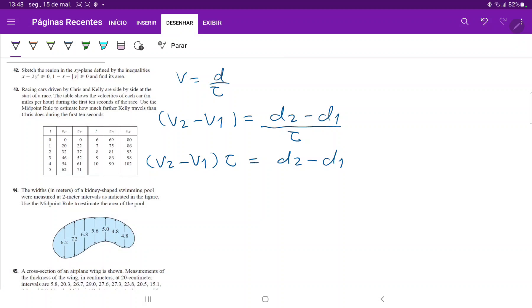So what we're really doing is delta V times time equals delta D. We're going to multiply delta V by time so that we can get delta D, which is the difference of distance between Kelly and Chris.